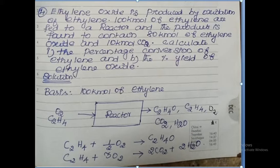Which equipment is used here? As per the problem, a reactor is acting as the unit operation. The ethylene and oxygen are reactants fed to a reactor to produce products: ethylene oxide, carbon dioxide, and water. Some unwanted components are also present on the product side. What are the unwanted or unreacted components? Ethylene and oxygen.